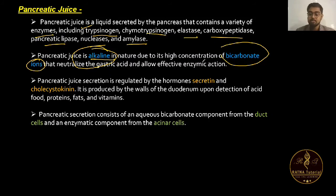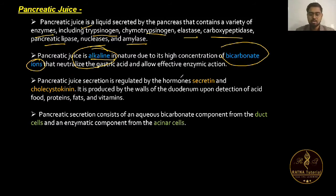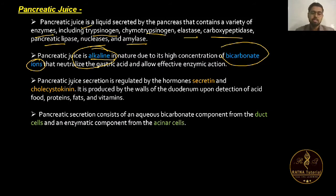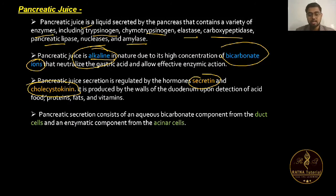The high bicarbonate ion concentration makes pancreatic juice alkaline, which neutralizes the gastric acid in the chyme and allows effective enzyme action. Secretion of pancreatic juice is regulated by two hormones: secretin and cholecystokinin.